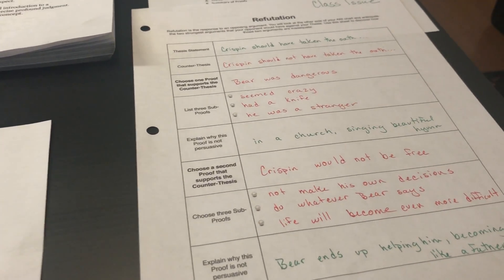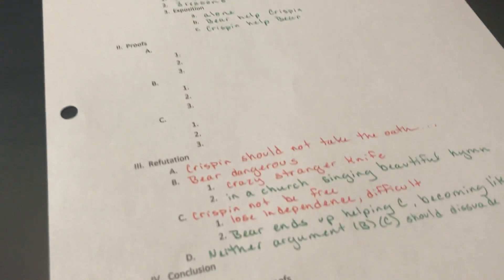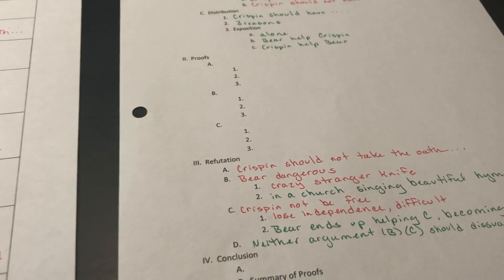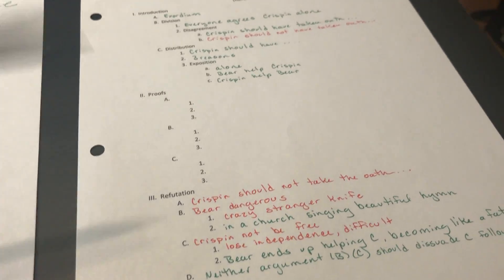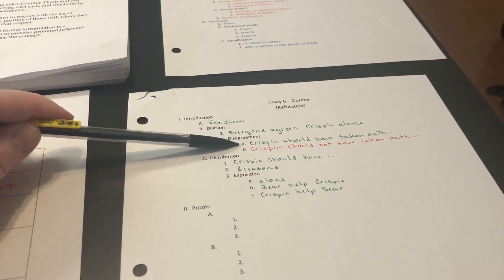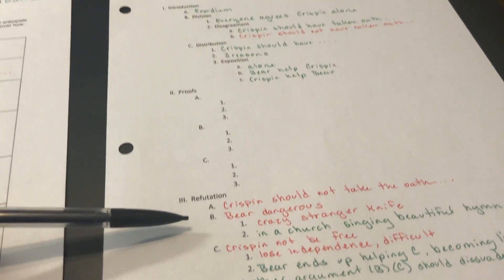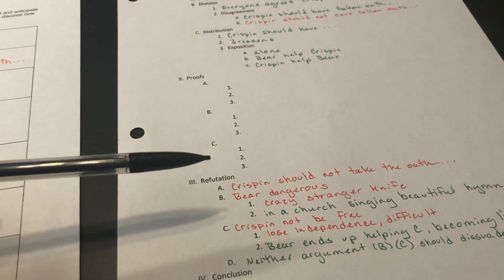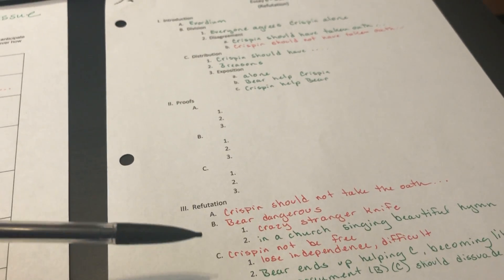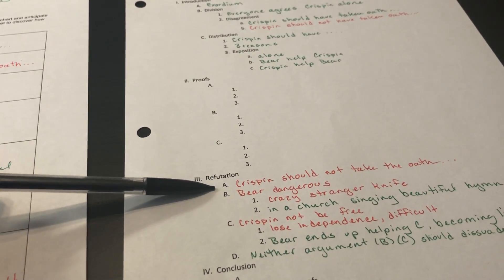This is what that chart looks like, and we put it into our outline like this. I went ahead and had this pre-typed up for them so that they could just fill in the blank, knowing that we weren't going to get to the whole thing. We had our thesis: Crispin should have taken the oath, becoming Bear's bondservant. Here we're going to get to our refutation. The green is the viewpoint of the person writing the paper, the one who is persuading that yes, Crispin should take the oath. The red is the viewpoint of the opposing argument. Crispin should not have taken the oath.